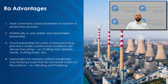There are both advantages and disadvantages with the RA parameter. Let's begin with the advantages. The first is that RA is the most commonly used parameter to monitor a manufacturing process. Statistically, RA is a very stable and repeatable parameter. RA is a good parameter for when a manufacturing process is under control and the conditions are always the same — for instance, the cutting tool, cutting fluids, speeds, feeds, etc. Lastly, RA is meaningful for random surface roughness machined by tools or processes that do not leave marks on the surface, for example, grinding and polishing.